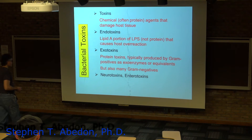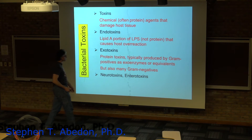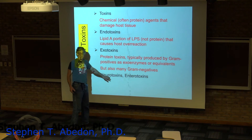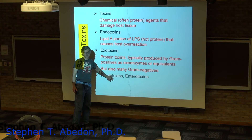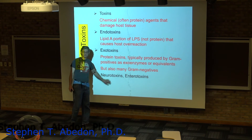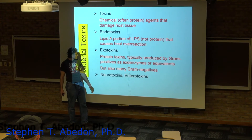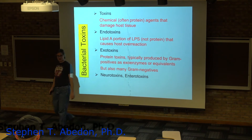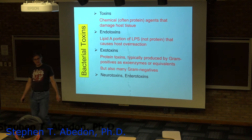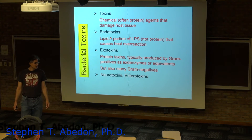Exotoxins can be neurotoxins or enterotoxins. Botulinum toxin is a neurotoxin — it affects our neurons. Enterotoxins are things that affect our digestive system.